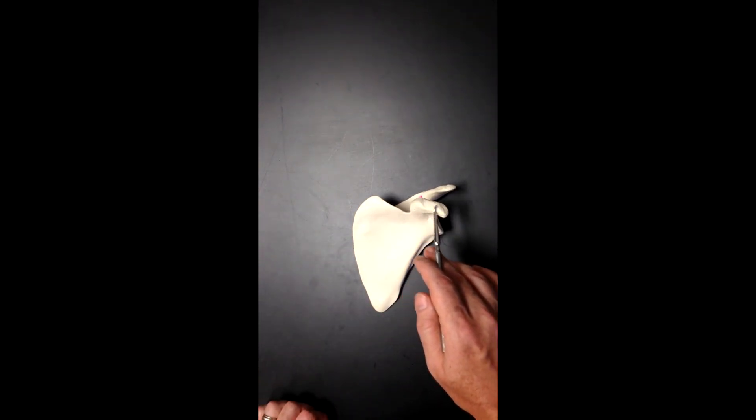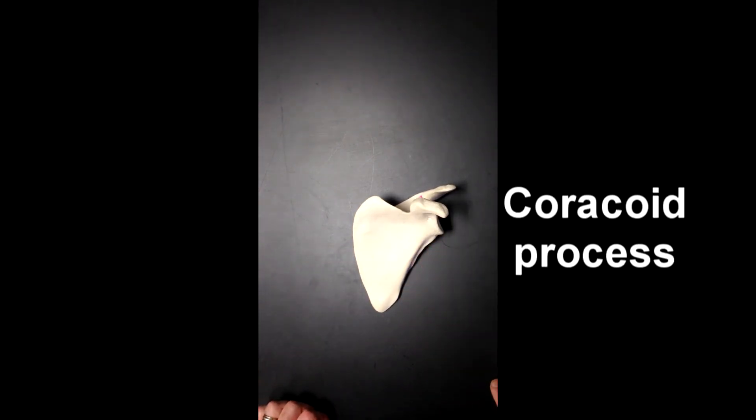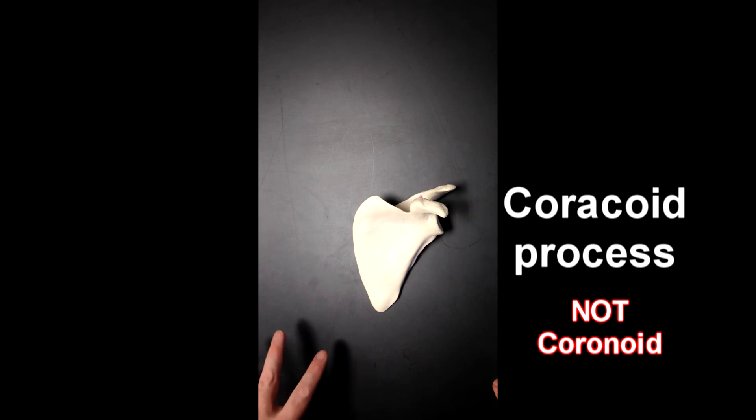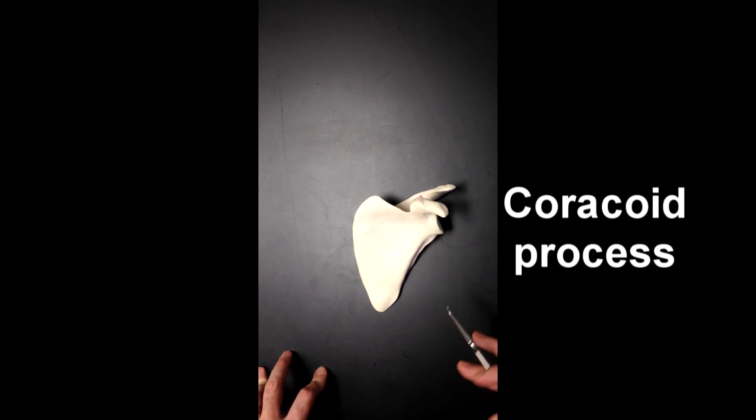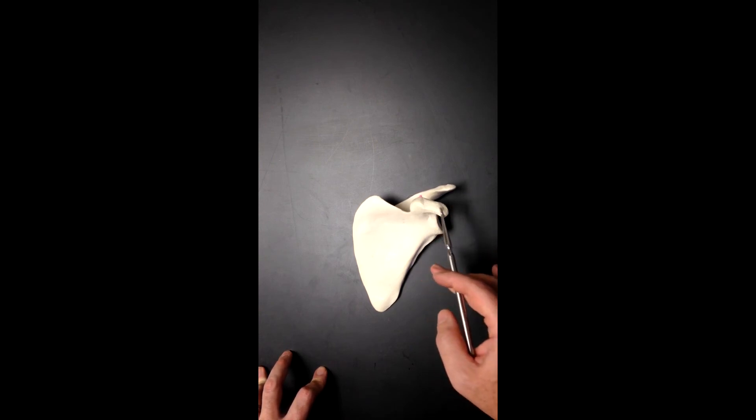Here, this structure is the coracoid process of the scapula. Coracoid, as opposed to coronoid, we would find coronoid processes on other structures, like the ulna bone and the mandible. This is the coracoid process, and coracoid means crow's beak. So early anatomists thought this structure looked very similar to what a crow's beak looks like.